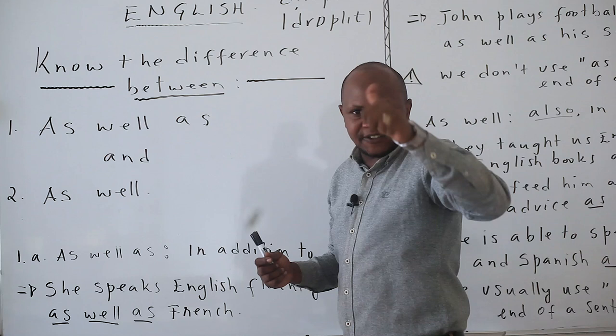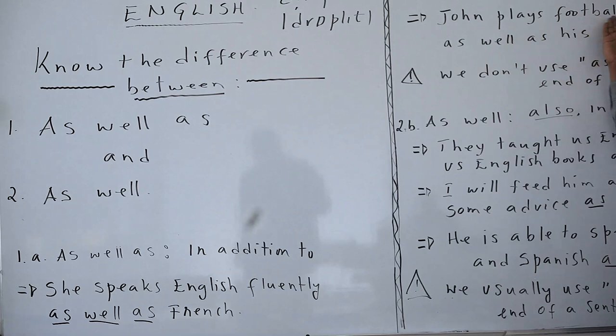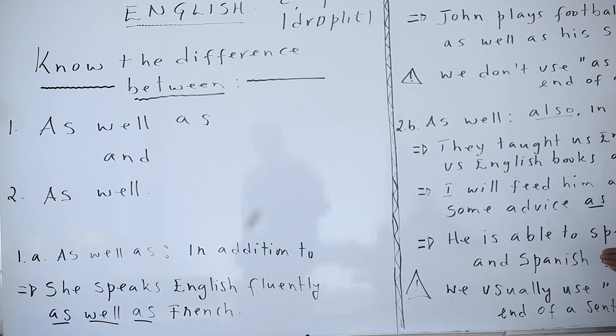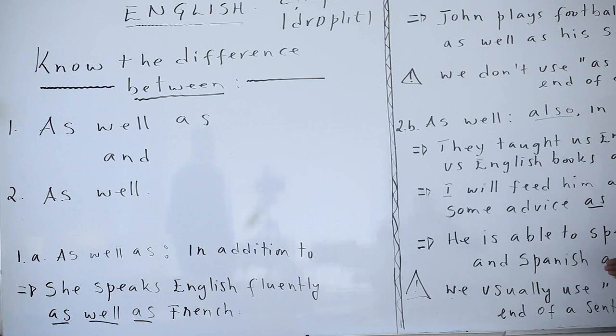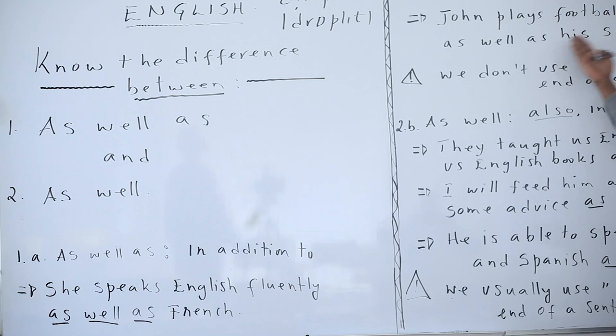Another example: 'John plays football and tennis as well as his son.' This means John plays football and tennis, and in addition, his son plays them too. That is how we use as well as — to mean in addition to.